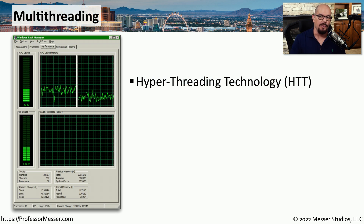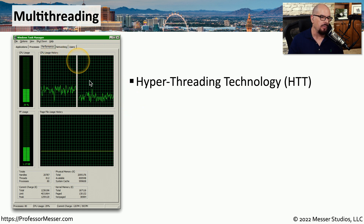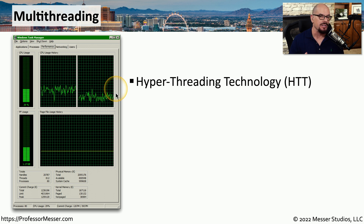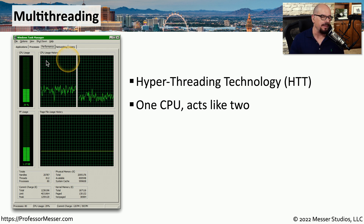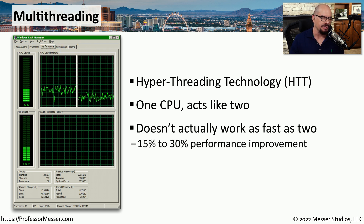If you start monitoring the amount of processing occurring on your CPU, you might see images like this in an application such as Windows Task Manager. Here you can see different processes occurring between what seems to be two different CPUs. But in reality, this is a single CPU core. The reason this looks like multiple CPUs is that it is using hyper-threading technology, or HTT. You might have a single physical CPU core, but it looks and operates as if it is multiple CPU cores.